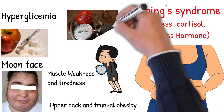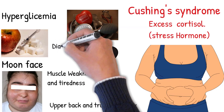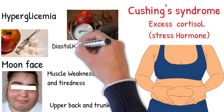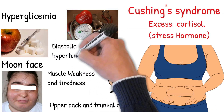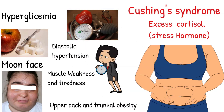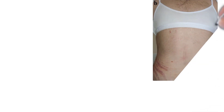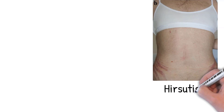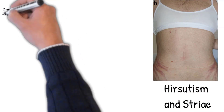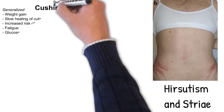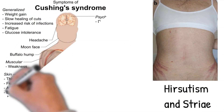Diastolic hypertension is caused by the increased production of weak mineralocorticoids, glucocorticoids, and insulin. Hirsutism and virilization are caused by increased androgens and insulin; insulin increases androgen synthesis in the ovaries. Purple abdominal striae, or stretch marks, occur because excess cortisol weakens collagen, causing rupture of blood vessels in the stretch marks.